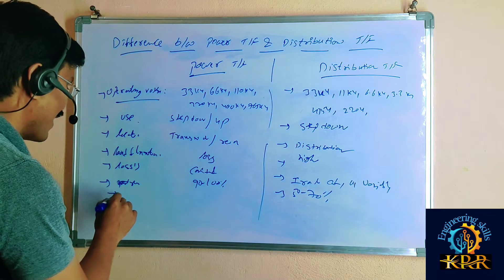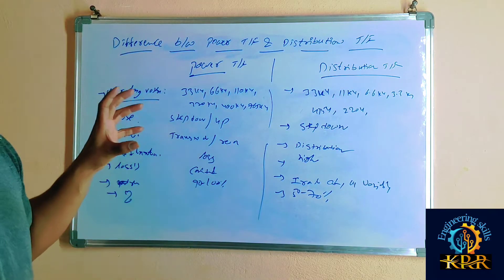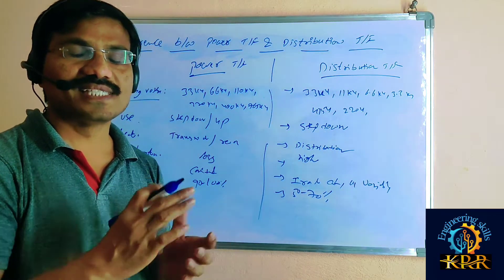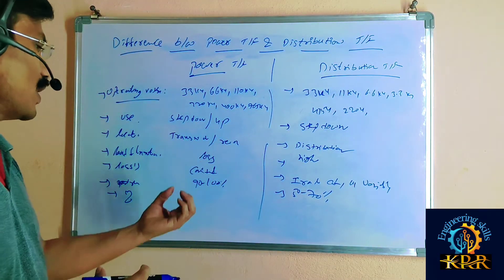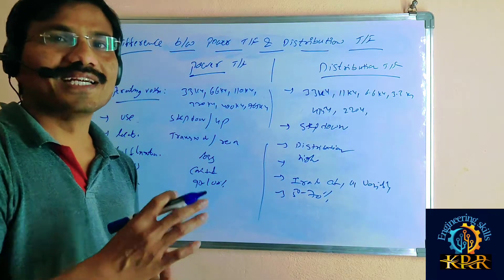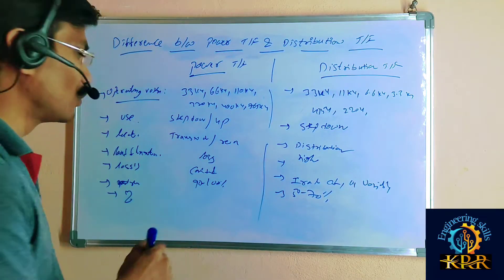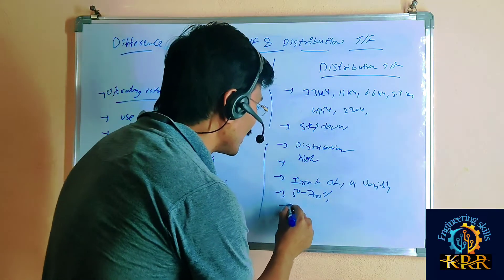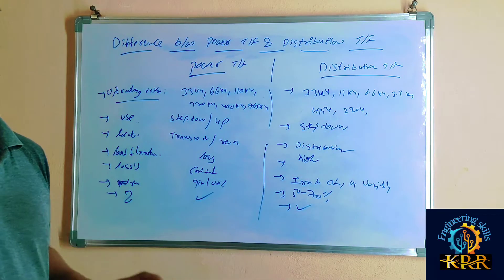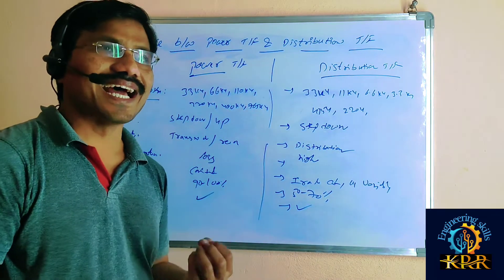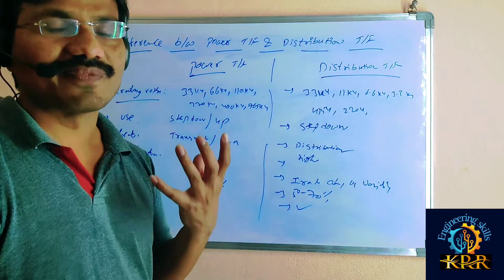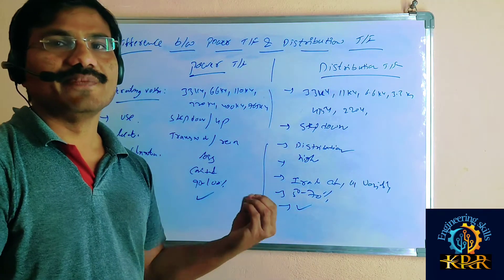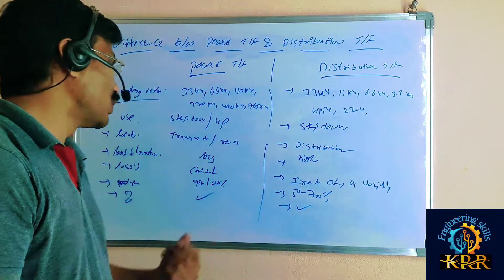If you go for the efficiency point of view, the power transformer will get 100% efficiency. The operating load is 90 to 100%, and we will get more efficiency. If you go for the distribution transformer, the distribution transformer will also get 100% efficiency, but the load is operating at 50 to 70%.